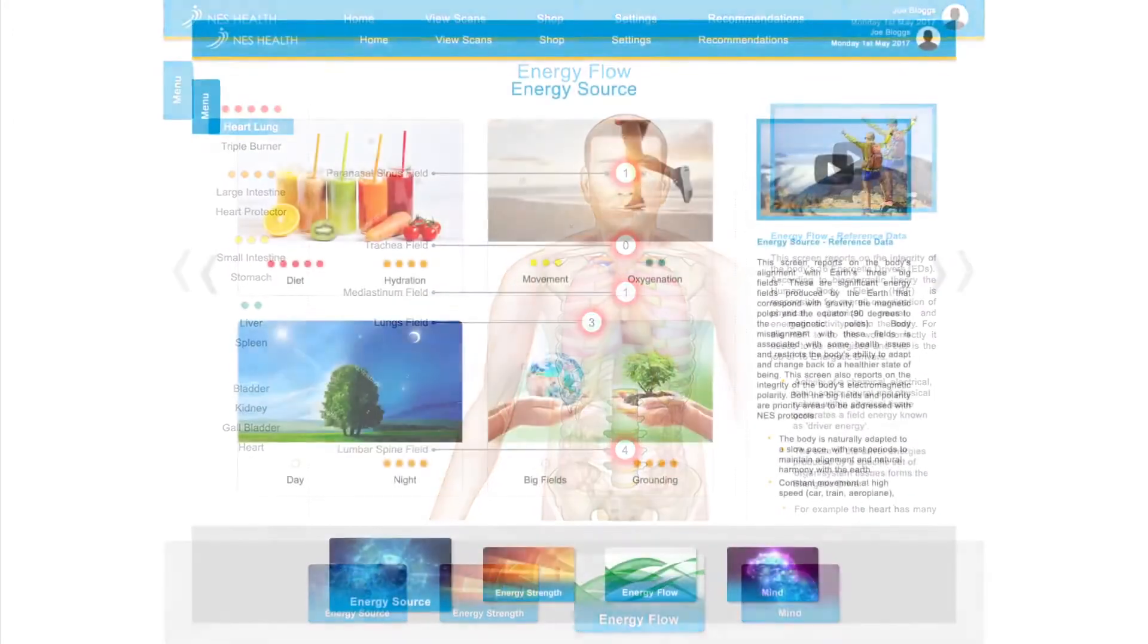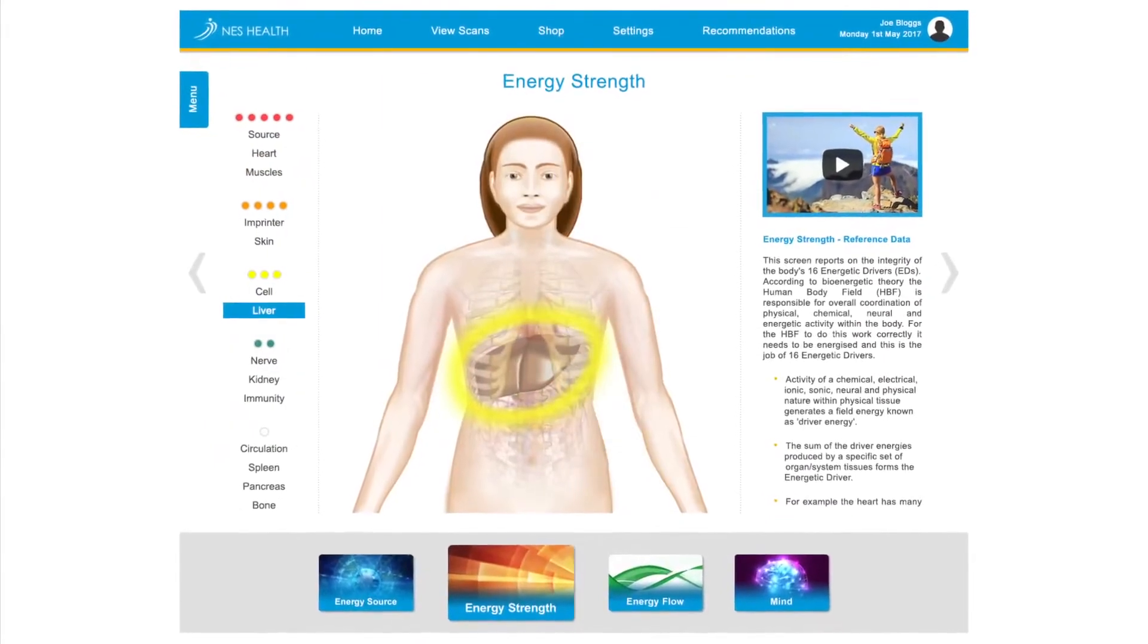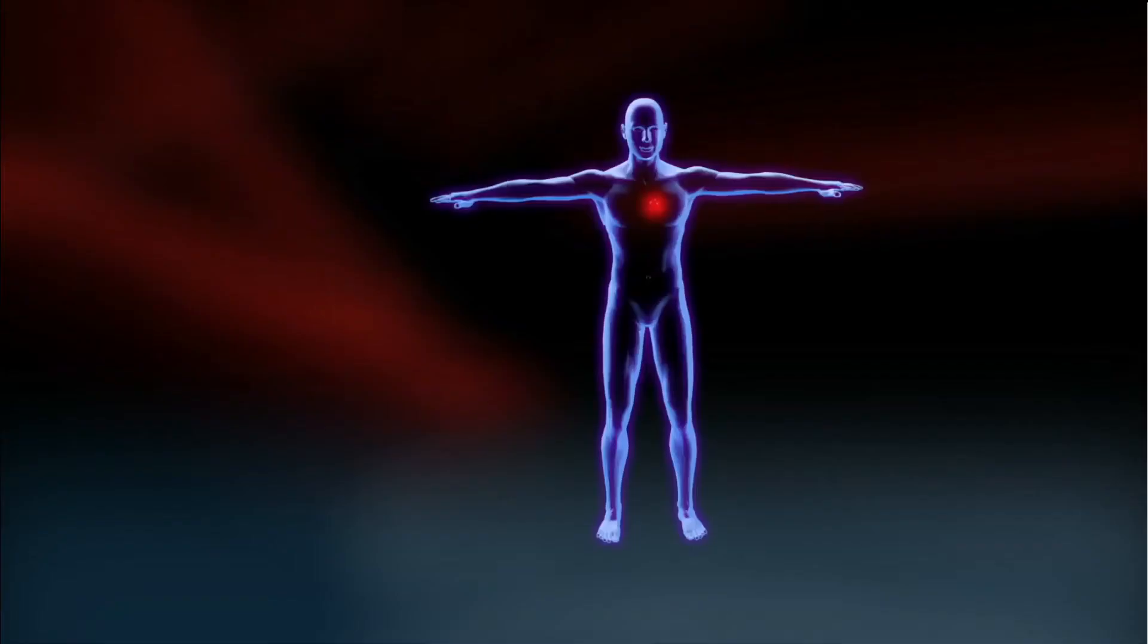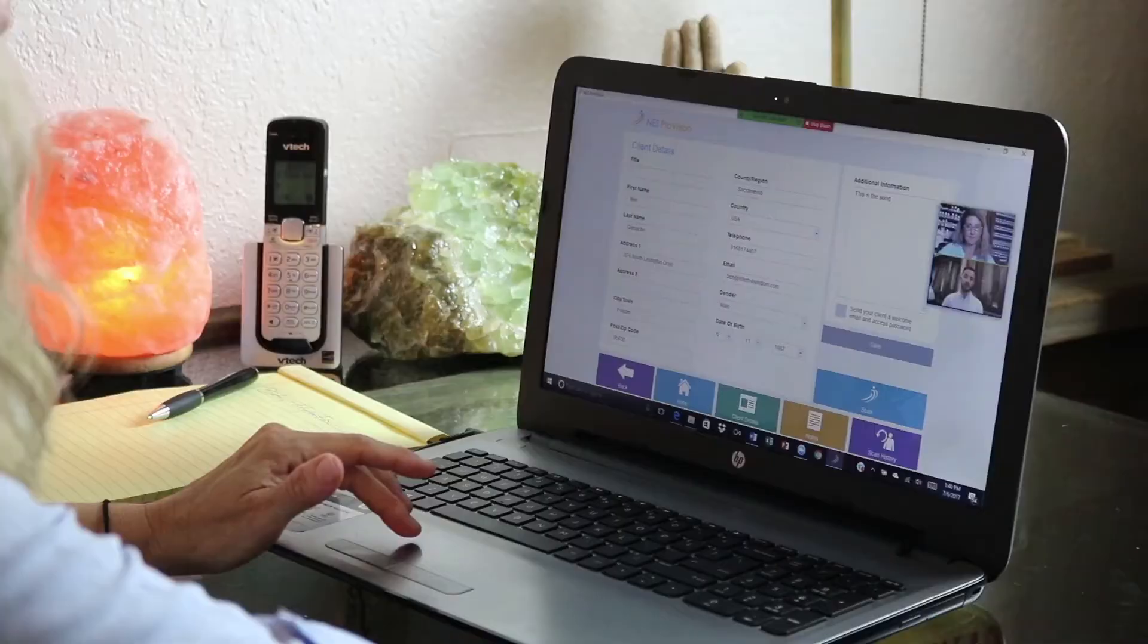And not only can you see and measure the energy distortions in your client's body field, but with the Bioenergetic Wellness System, you can also take the simple, safe steps to restore the body field's full and abundant energy so it can once again communicate correctly with all of your cells. No, it's not Star Trek or science fiction. It's real, and the technology is here.